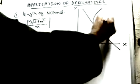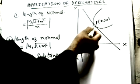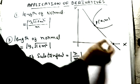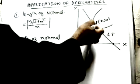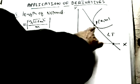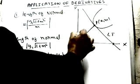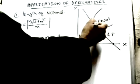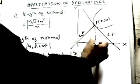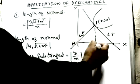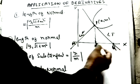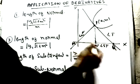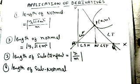From the point (x₁, y₁) where the tangent is drawn, the length along the tangent to where it meets the x-axis is called the length of tangent. Similarly, the length from the point to where the normal intersects the x-axis is the length of normal. If we draw a perpendicular from the point to the x-axis, the horizontal distance to the tangent intersection is the length of sub-tangent, and to the normal is the length of sub-normal.